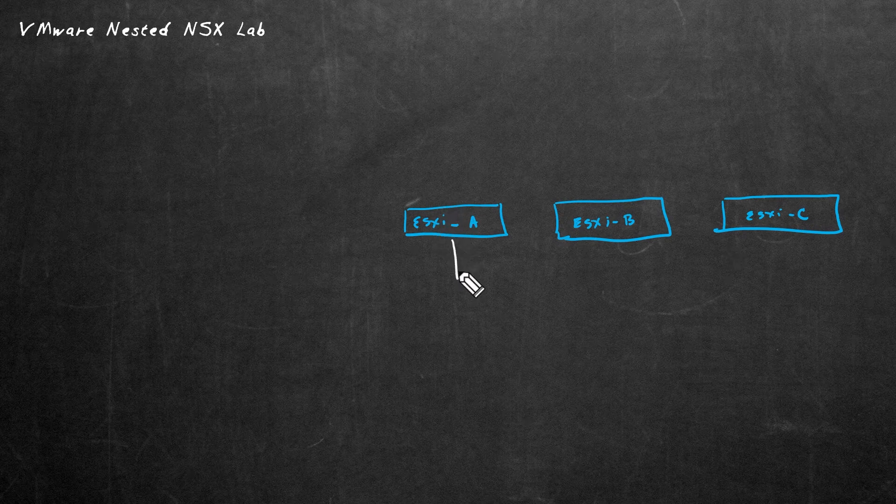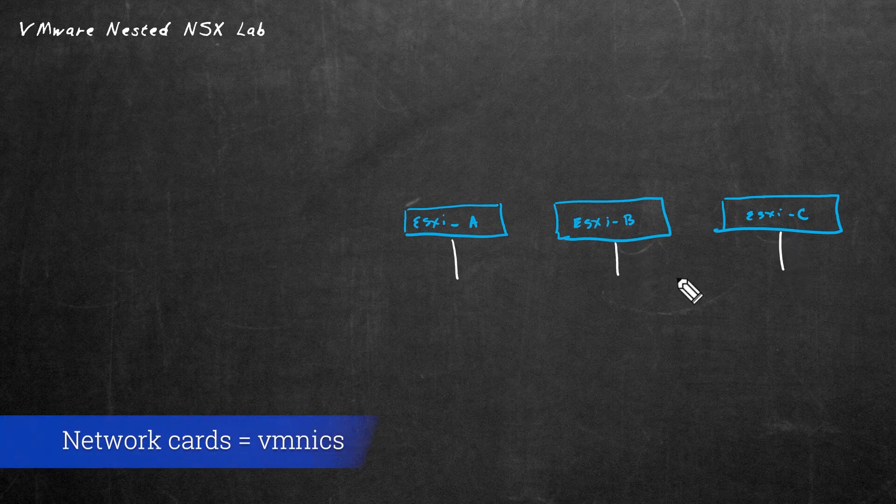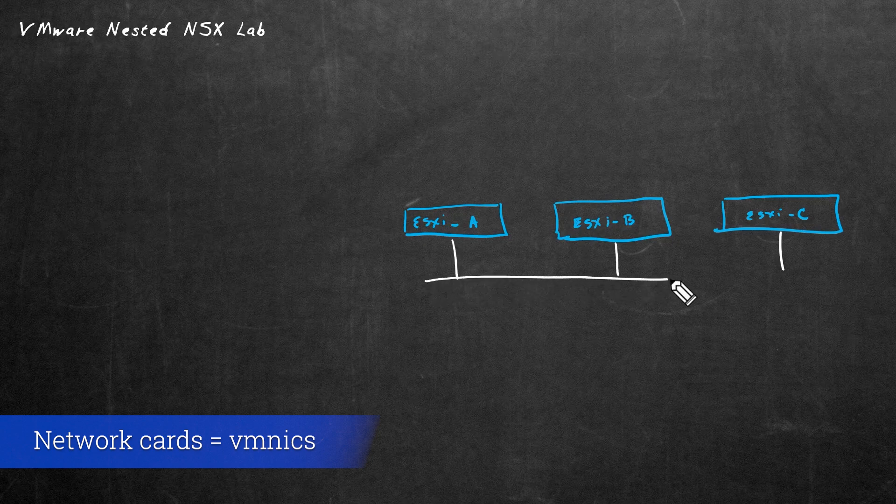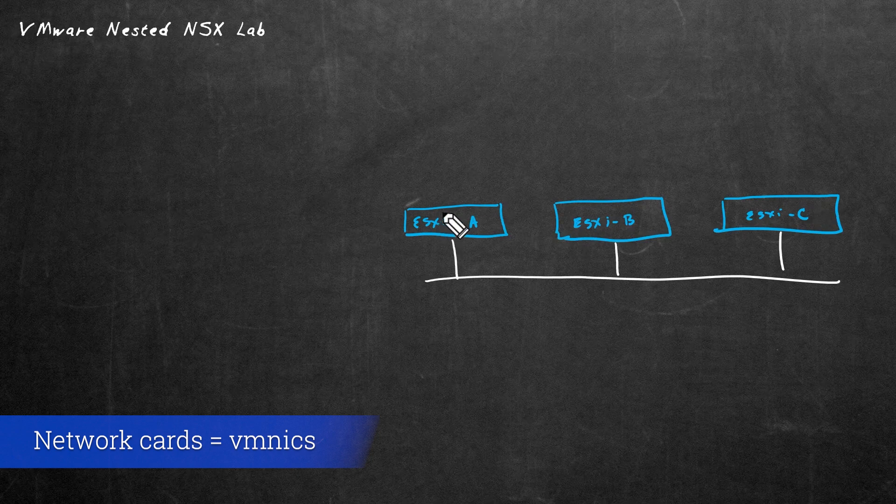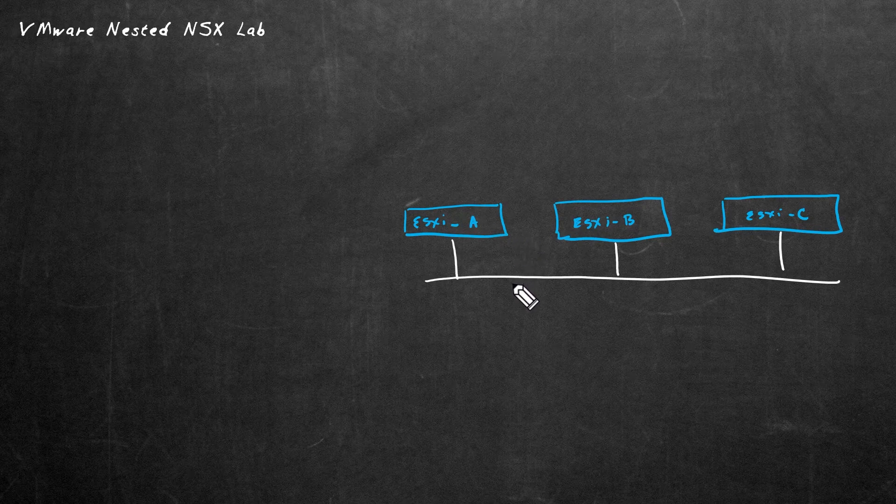So each of these servers is going to have one or more network interface cards. In the world of VMware, they refer to those as VMNix, the physical network adapters that connect to the network. And even though these ESXi hosts that are running the ESXi hypervisor software can be managed individually, most of the time, especially if you have more than one ESXi host, we're going to use a centralized management tool called vCenter.